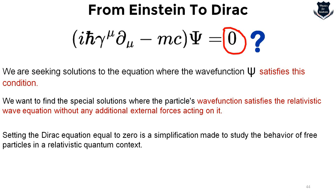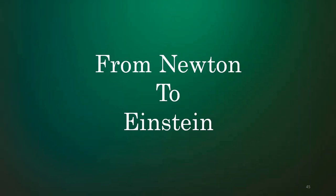One thing still remains unanswered: what is the nature of space-time itself? Einstein's revolutionary idea was to envision space-time as a dynamic fabric — rippling and curving in response to mass and energy. The motion of objects is now intricately woven into what is called the fabric of the cosmos.